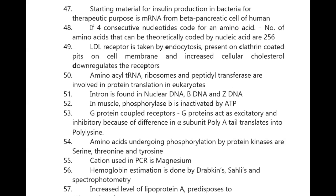Amino-acyl tRNA, ribosomes, and peptidyl transferase are involved in protein translation in eukaryotes. Intron is found in nuclear DNA, B-DNA, and Z-DNA. In muscle, phosphorylase b is inactivated by ATP. G protein-coupled receptors: G proteins act as excitatory or inhibitory because of differences in the alpha subunit.